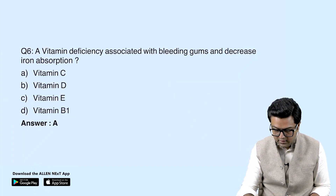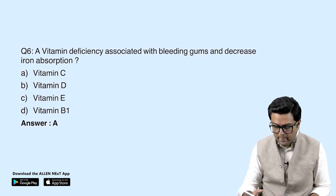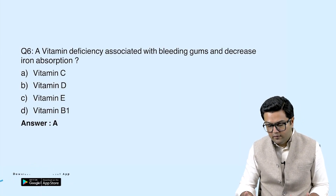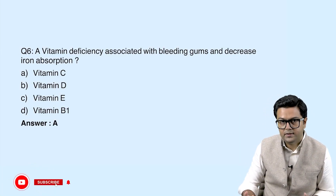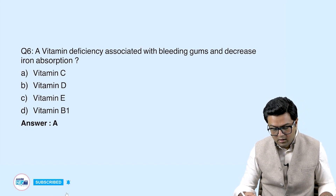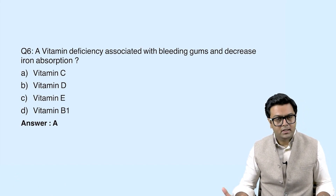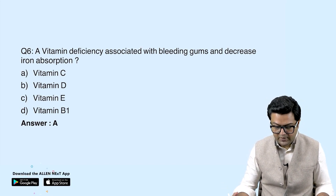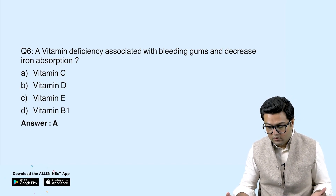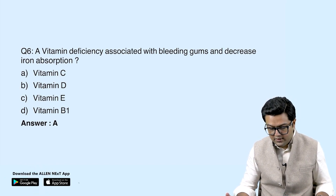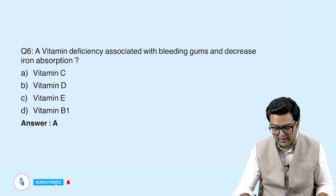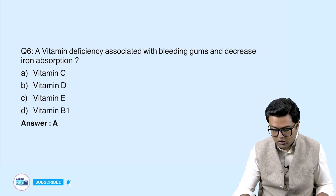The question asks about vitamin deficiency associated with bleeding gums and decreased iron absorption. The answer is definitely vitamin C. Bleeding gums and decreased iron absorption are classic signs of vitamin C deficiency.